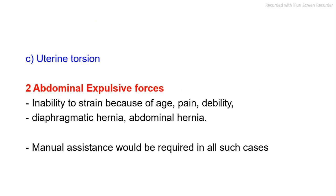Extensive ruptures with prolapse of abdominal organs necessitate emergency laparotomy with repair. Uterine torsion is another cause. Abdominal expulsive forces may be insufficient due to inability to strain because of age, pain, or debility. Diaphragmatic hernia and abdominal hernia are also causes; manual assistance would be required in all such cases.